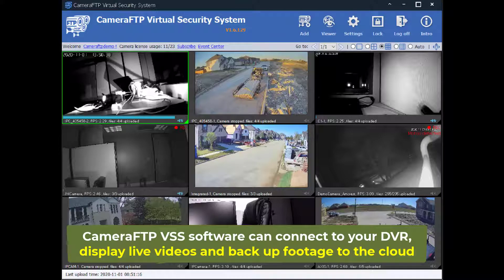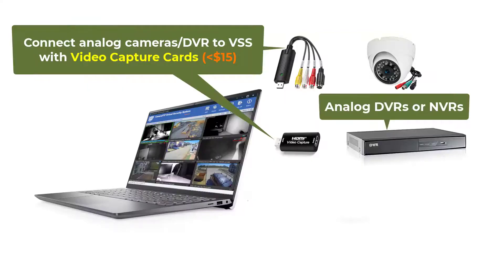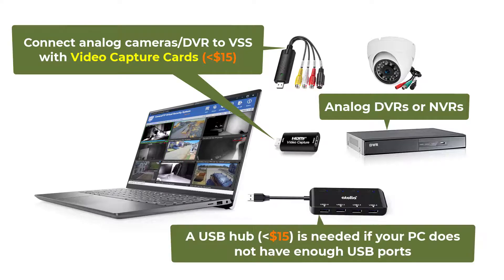If your DVR is analog, or if it is IP-based but does not support any of the FTP, SMTP, ONVIF, or RTSP protocols, you can still back up the footage with Camera FTP VSS software. You will need to buy a video capture card for each camera, and possibly a USB switch if your PC does not have enough USB ports.